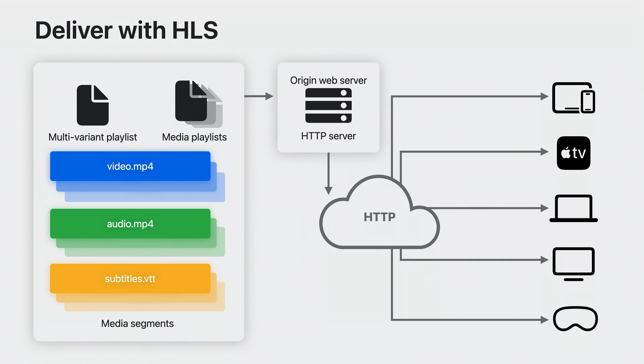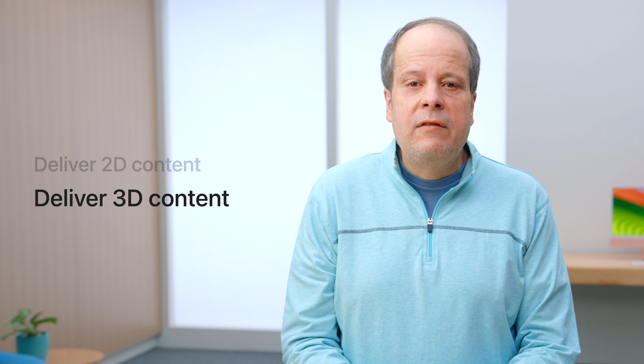Either way, it is these resources that are delivered to client devices for playback. Now that we've reviewed the 2D production and delivery pipeline, let's turn to 3D content and the differences in taking advantage of new spatial capabilities. We will again look at source encoding, packaging, and delivery, focusing on differences between 2D content and 3D stereoscopic content.